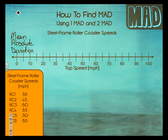So we're going to use an example of steel frame roller coaster speeds and their top speeds. We have six roller coasters that were tested, and they are shown down here in the bottom left. We can see that roller coaster one is 55 miles per hour, 45, 60...